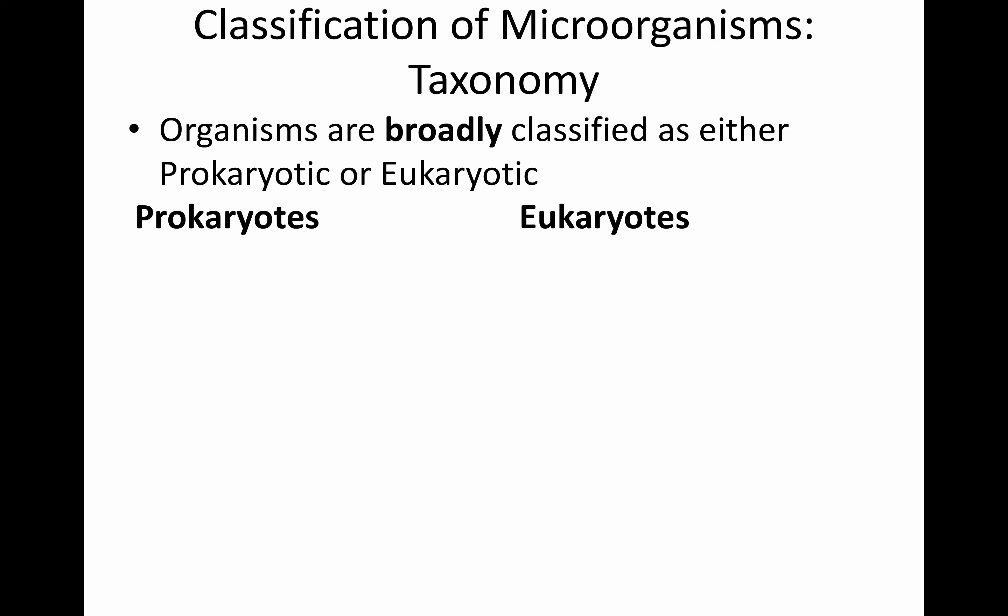Classification is basically grouping organisms with similar characteristics in order to determine relatedness of the different bacteria, protozoa, or whatever organism you might be studying. We can broadly classify all organisms as either prokaryotic or eukaryotic. Prokaryotic means there is no nucleus and no membrane-bound organelles, whereas eukaryotic organisms have a nucleus and membrane-bound organelles.